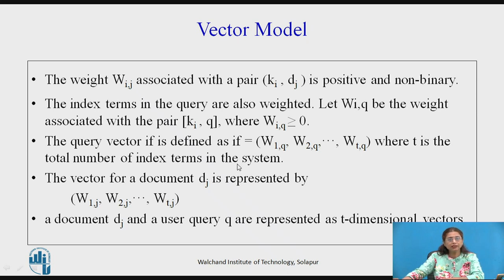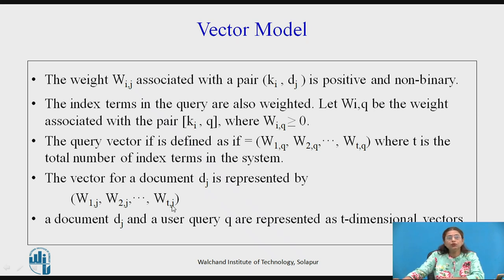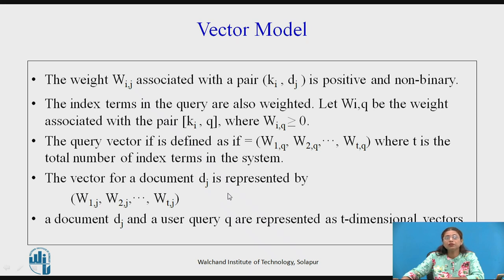So how will the query vector look? It is the weight of every term — first term, second term, up to t terms — with respect to the query. The vector for the document will be w1j, w2j, up to wtj, which is the weight of all t terms with respect to document j. In the Boolean model these weights are either 1 or 0, but here since it is non-binary, our task is to find the weight vector based on the frequency or the occurrences.